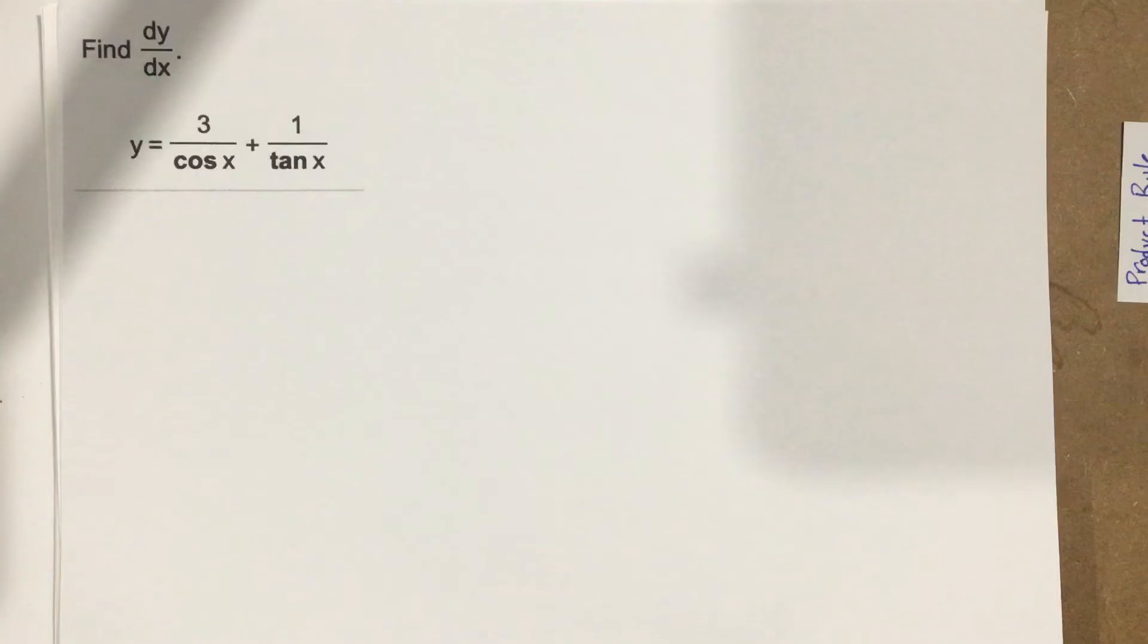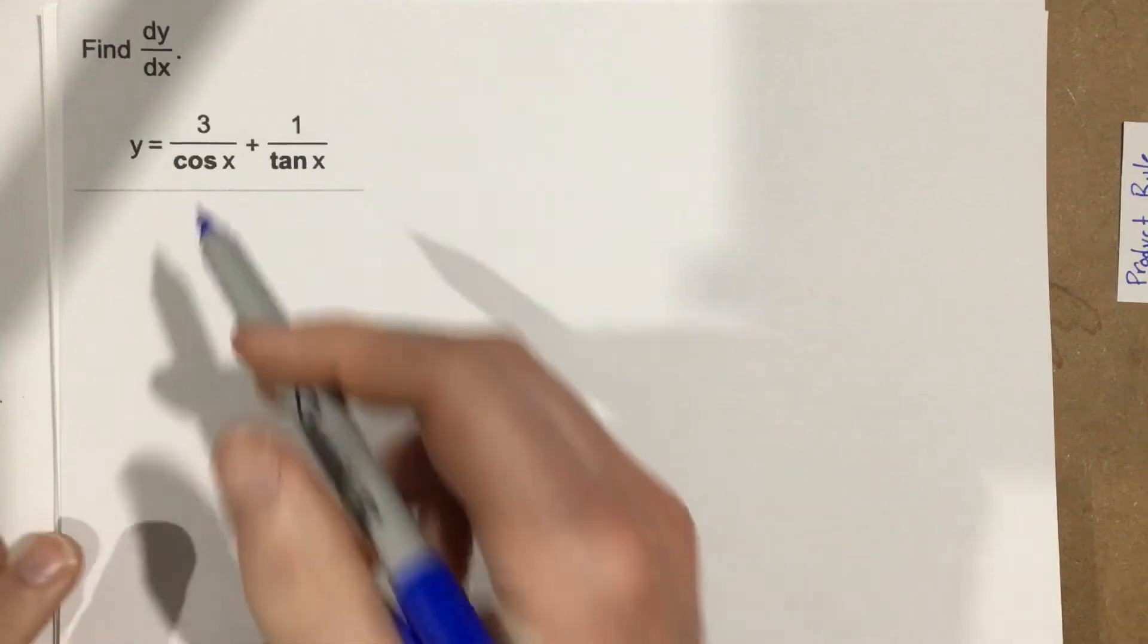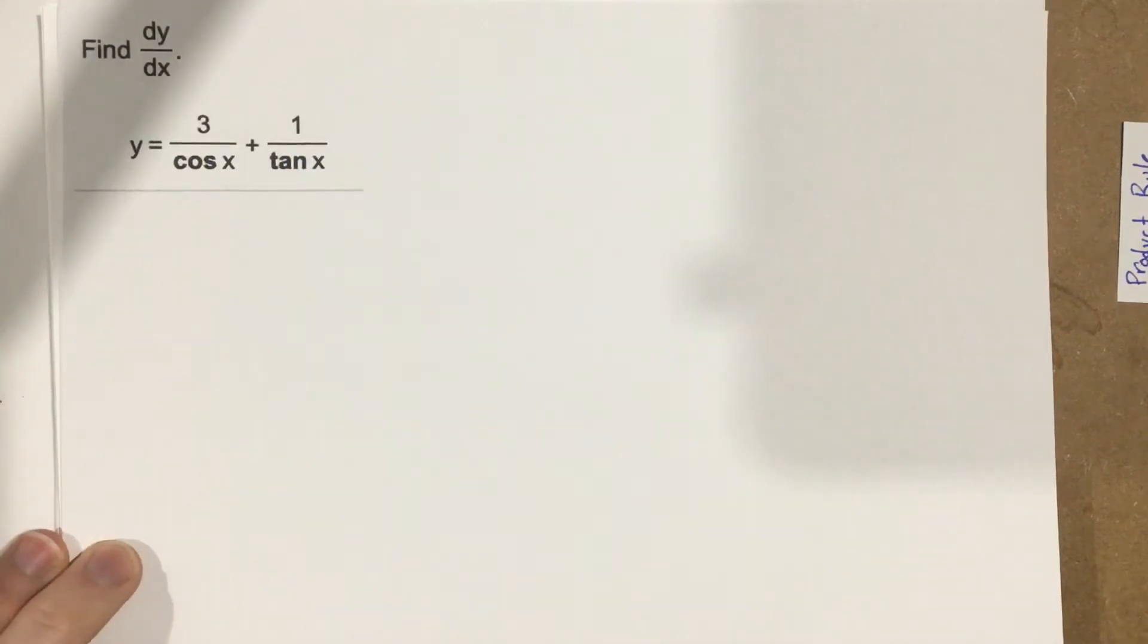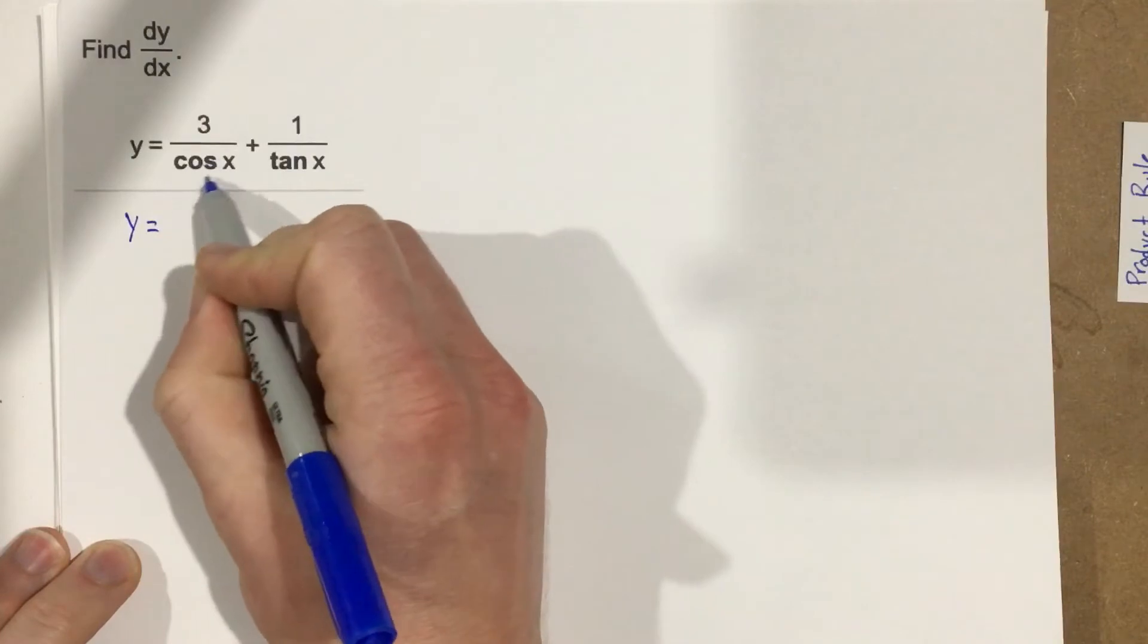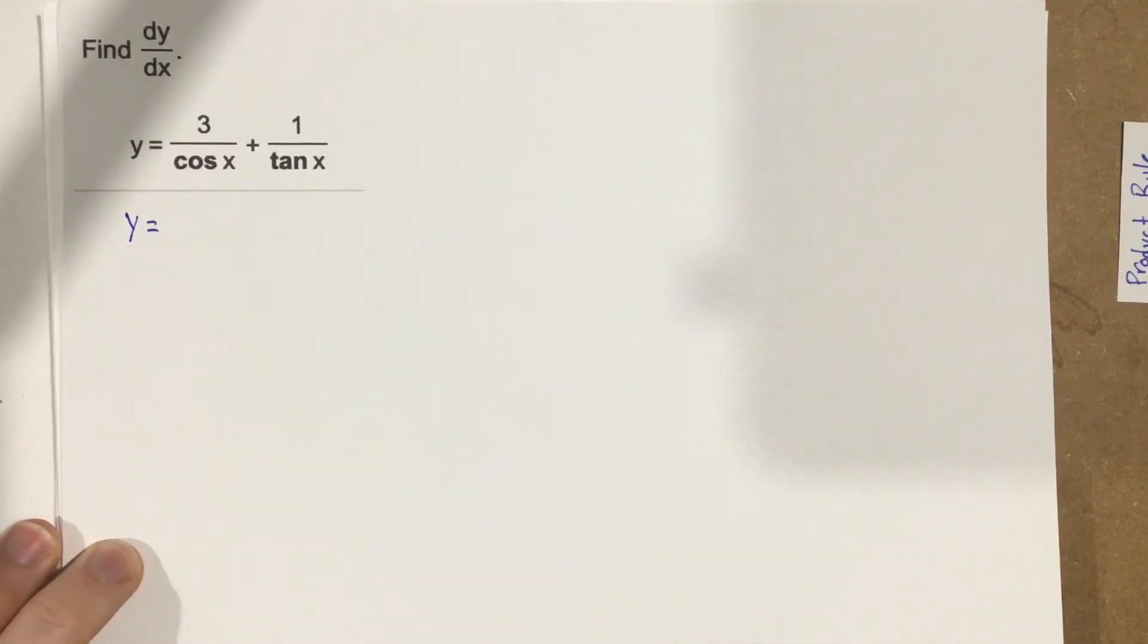Now, when we go to find these derivatives, we can rewrite these functions into different trigonometric functions before we start. Because these are in the denominator, we could technically use the quotient rule, but we could just rewrite these into a different trig function to start.